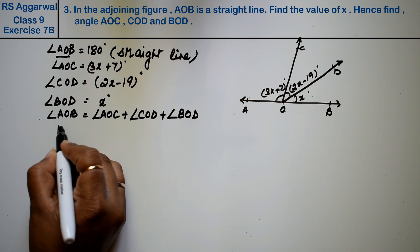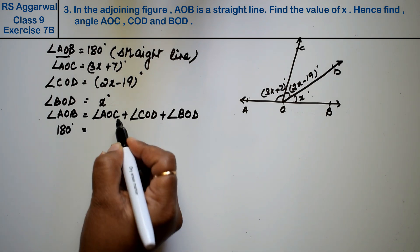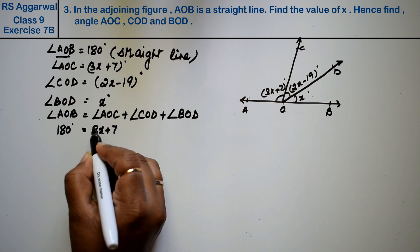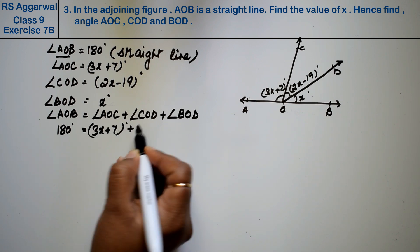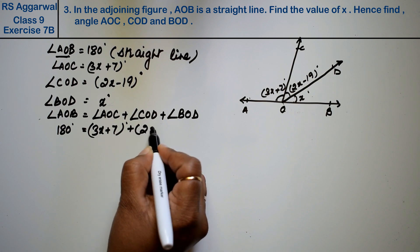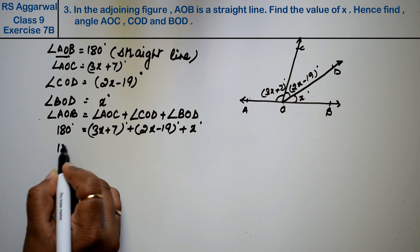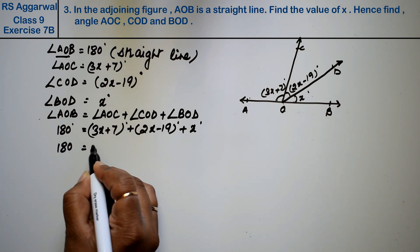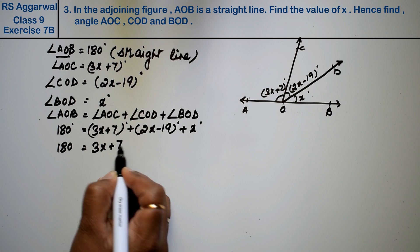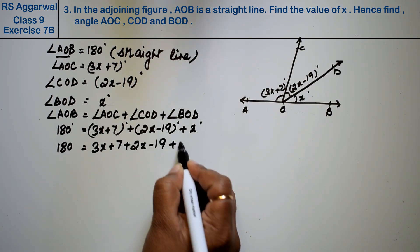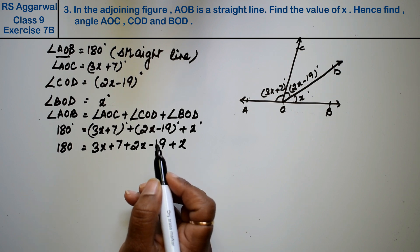AOB is 180 degrees. AOC is 3x plus 7 degrees, plus COD is 2x minus 19 degrees, and BOD is x degrees right friends. Opening the brackets, 180 equals 3x plus 7 plus 2x minus 19 plus x.